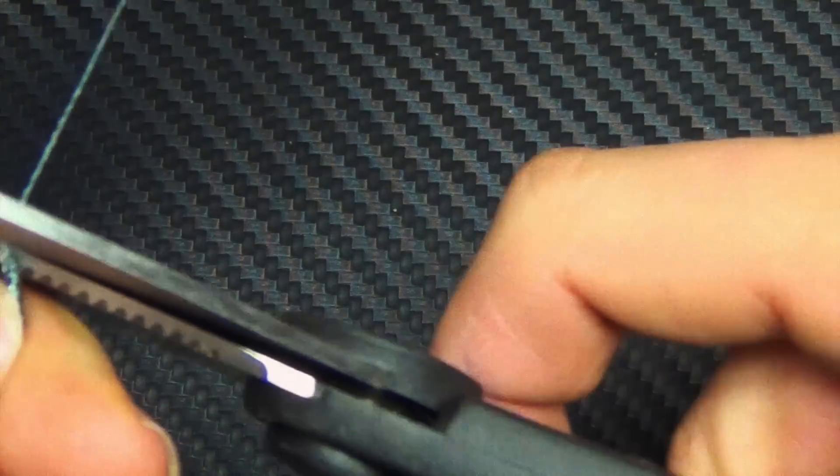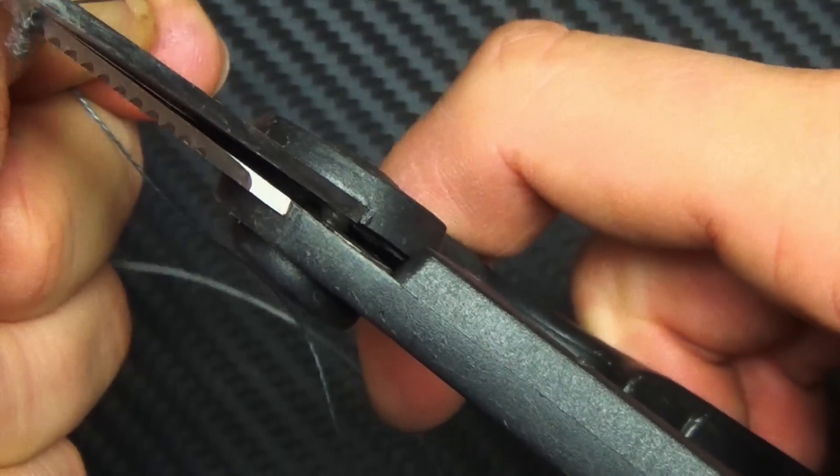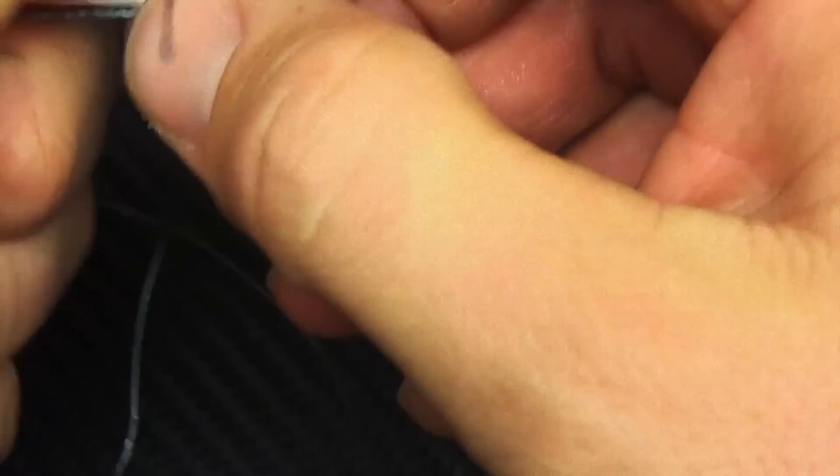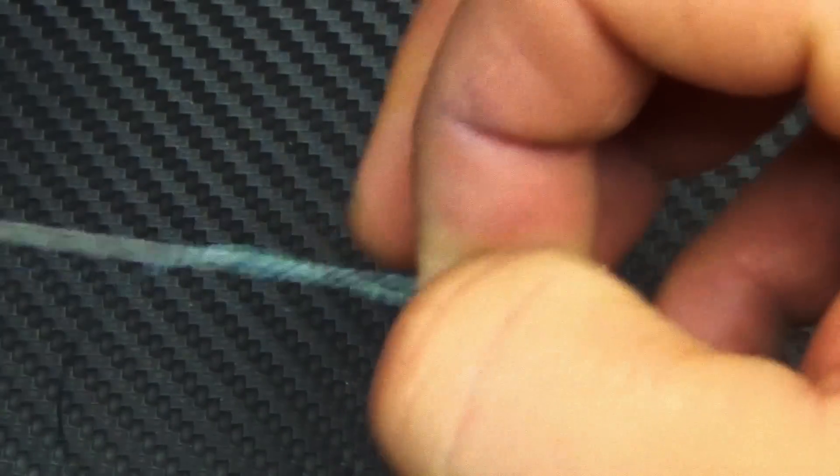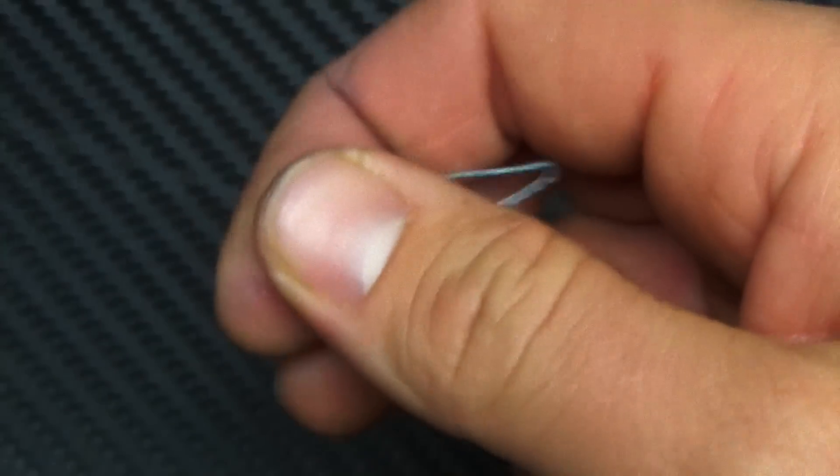And then what you're going to do is you're going to trim your tag ends. And you can get these extremely close. It's another nice thing about this knot.